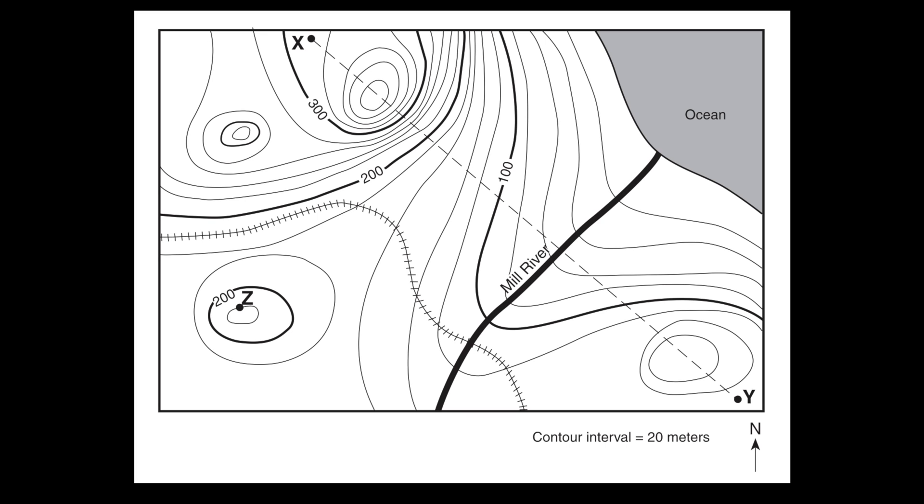Now just a quick review, all of these squiggly lines, these are contour lines and they're showing different elevations. So each line connects points of elevation above sea level. I notice on this map the interval between lines is 20 meters. So that means as you go from one contour line to the next, the elevation changes by 20 meters.